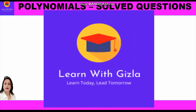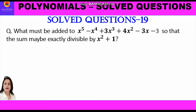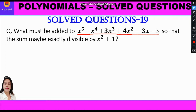Hello students, welcome to YouTube channel Learn with Gizla. In this video on polynomials, we shall take up the question: what must be added to x⁵ - x⁴ + 3x³ + 4x² - 3x - 3 so that the sum may be exactly divisible by x² + 1?